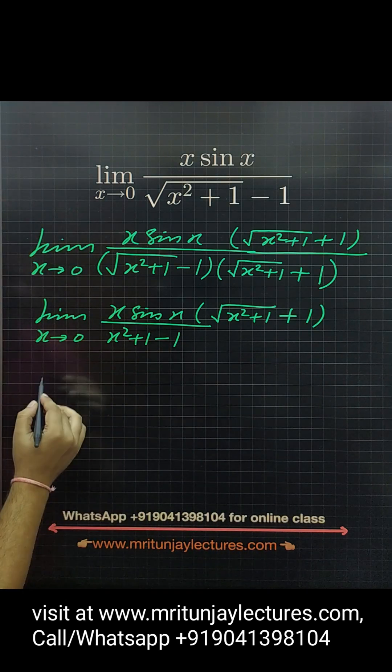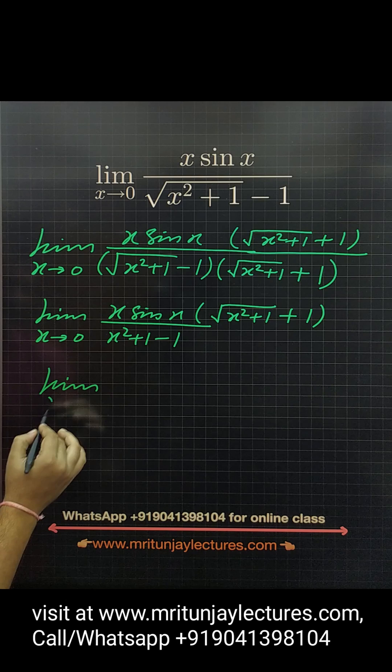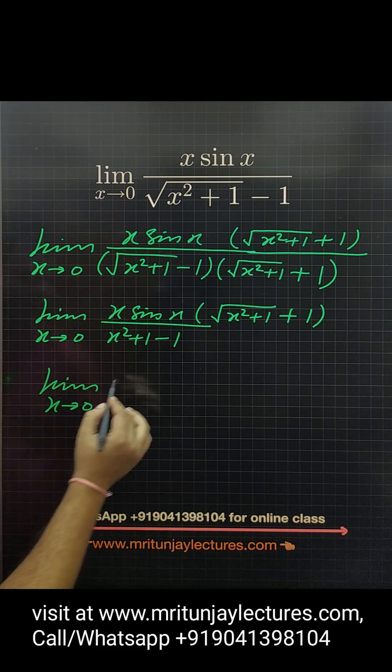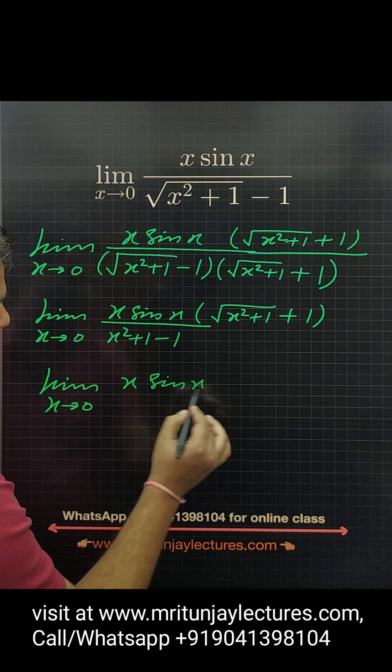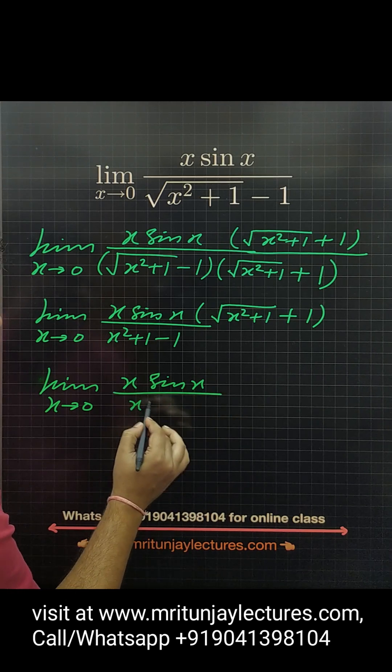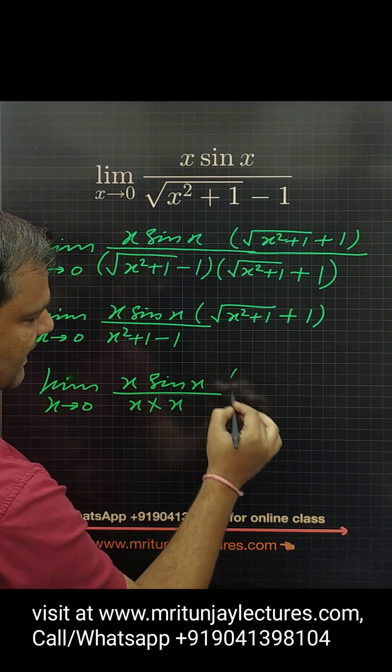One and one cancel. So limit x tends to 0, x sine x divided by x into x, and that one root x square plus 1 plus 1.